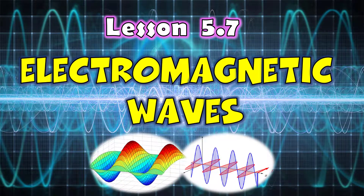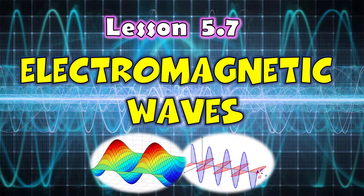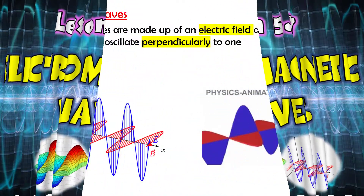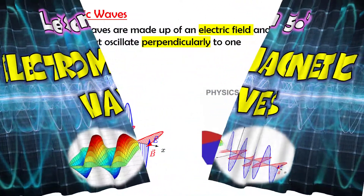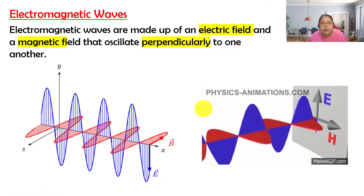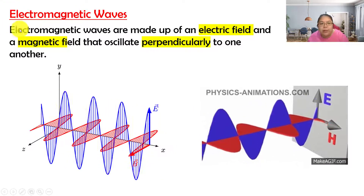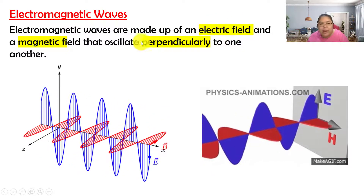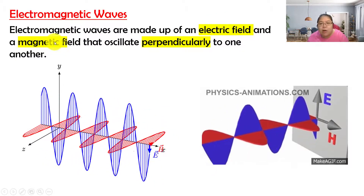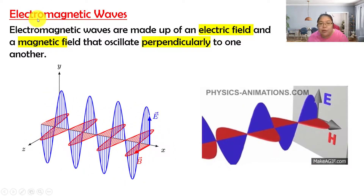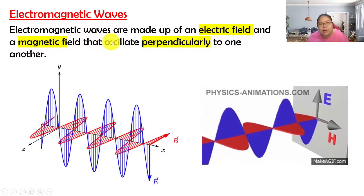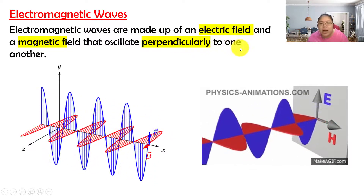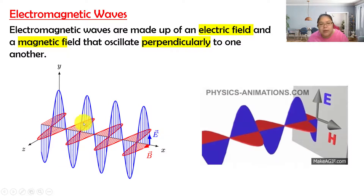Today we go to the last topic, that's 5.7 electromagnetic wave. First, we go to see what electromagnetic waves mean. They are made of the electric field and also the magnetic field, so that means they combine — that's how the name becomes 'electromagnetic.' These two physical quantities will oscillate perpendicular to each other, as shown in the diagram.